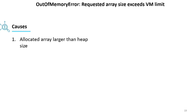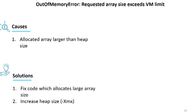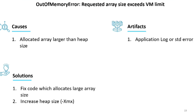Quick recap: this out-of-memory error happens when the allocated array size is larger than your heap size. The solution is to see whether you genuinely need such a large array — if not, fix it; if you do legitimately need it, increase the XMX. You don't need any tools to analyze this type of error — just look into the application log or standard error output.